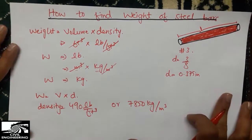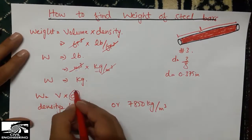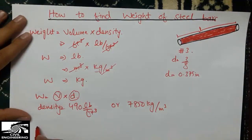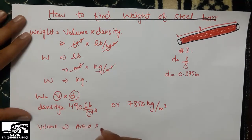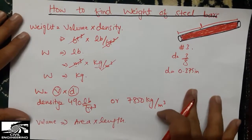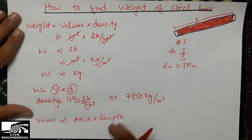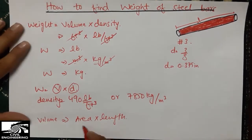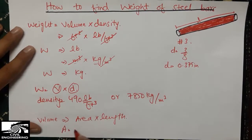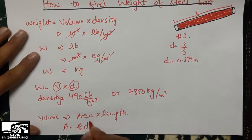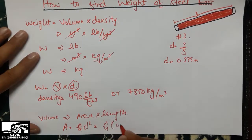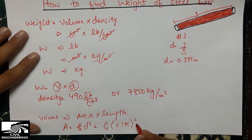The density is known; what we need is the volume. Volume equals area multiplied by length. Since the steel bar is cylindrical, its cross-sectional area is π/4 × d². With d = 0.375 inches, we get: π/4 × (0.375)².